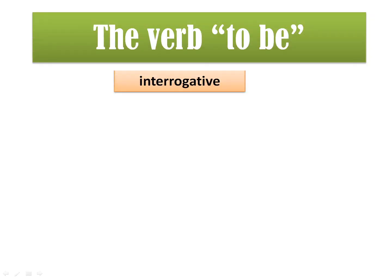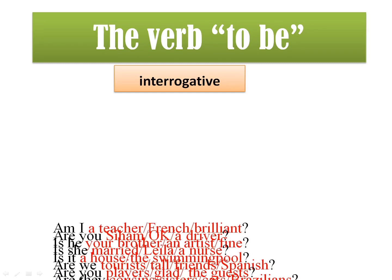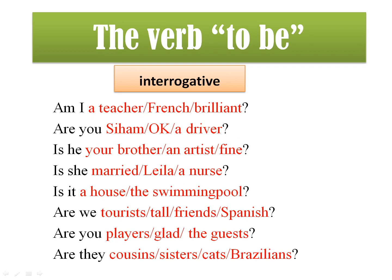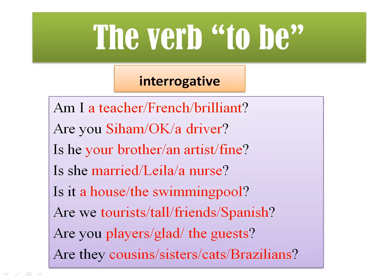Now let's move to the interrogative form of the verb 'to be'. It's just inversion — you move the verb to the beginning of the sentence. So 'I am a teacher' becomes 'Am I a teacher?' Am I French? Am I brilliant? Are you Siham? Are you a driver? Is he your brother? Is he an artist? Is she married? Are we tourists? Are we Spanish? Are you players? Are they cousins? Are they Brazilians? For example, 'She is my teacher' becomes 'Is she my teacher?' — a simple movement bringing the verb to the front.